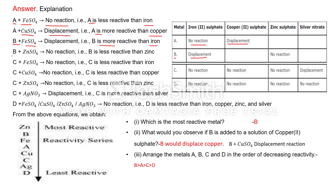When C is added to FeSO₄, CuSO₄, or ZnSO₄, no reaction occurs in all three cases, meaning C is less reactive than iron, copper, and zinc.